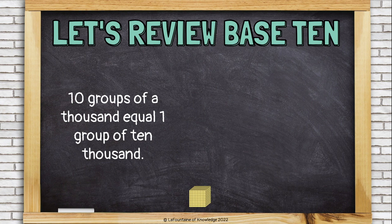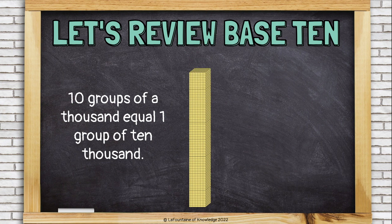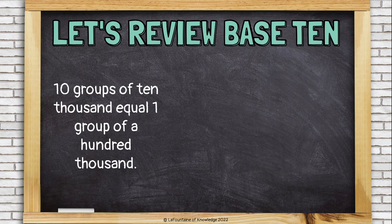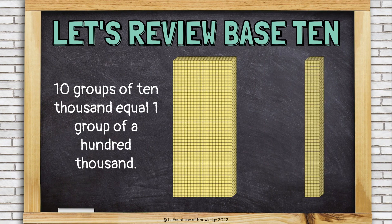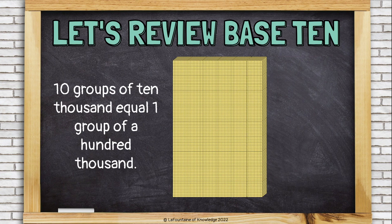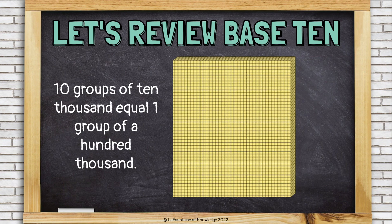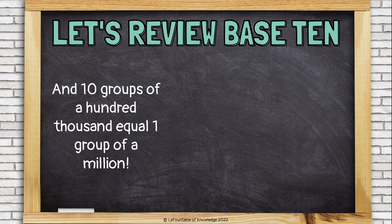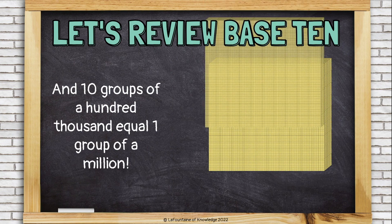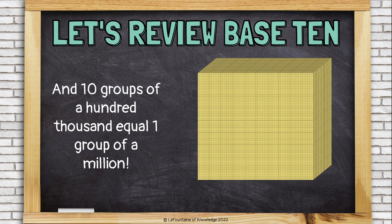10 groups of 1,000 equals 1 group of 10,000. 10 groups of 10,000 equals 1 group of 100,000. And 10 groups of 100,000 equals 1 group of 1,000,000.